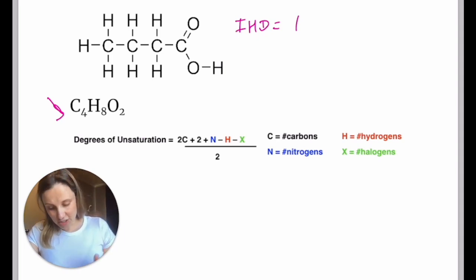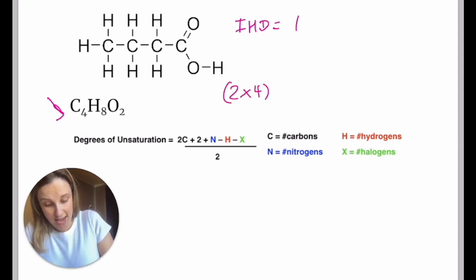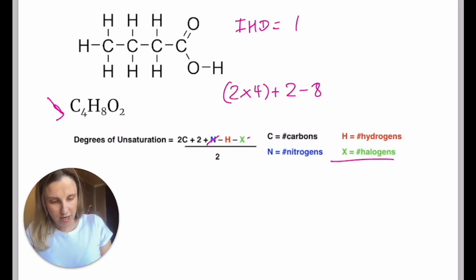So what they're doing is they're saying that you've got two times the number of carbons, which in this case is eight, plus two, plus the number of nitrogens, which we don't have any. And then we're going to do minus the amount of hydrogens, which is eight. X is a halogen. We don't have any of those, so I'm kind of ignoring it. And then we're going to divide the whole thing by two.